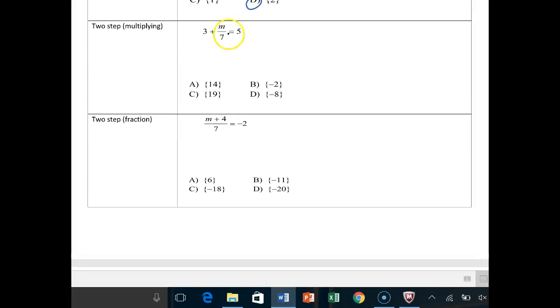Two-step multiplying. And again, we see that division or we see that fraction. So we know we're going to multiply. See fraction, know you will eventually multiply. It's inverse of division, right? The opposite of division is multiplication. The opposite of multiplication is division. So we have a two-step equation.